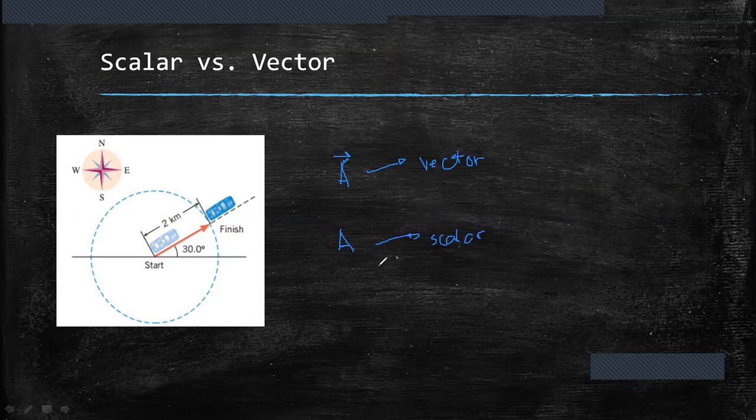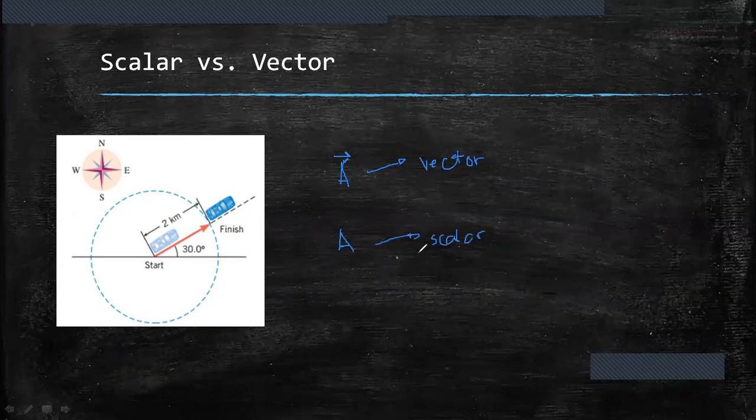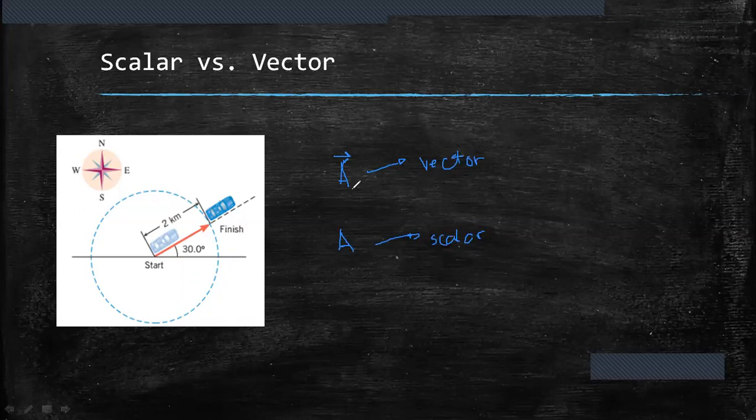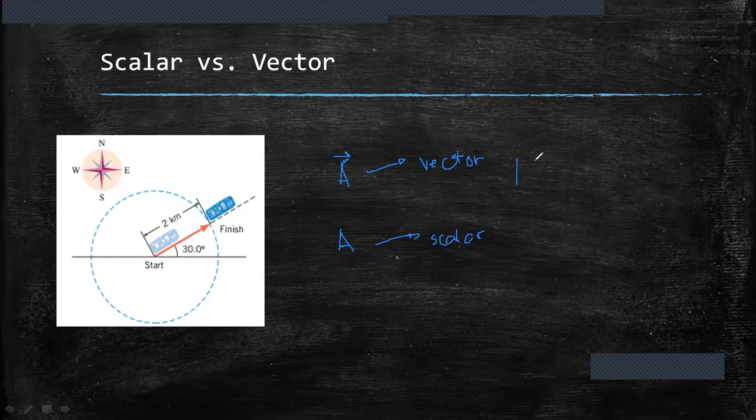Also, we can represent a scalar, the magnitude of a vector, by using bar notation. Putting the vector quantity in a bar means you are looking at or it gives us the magnitude.